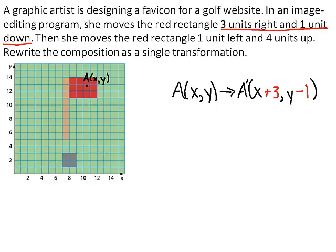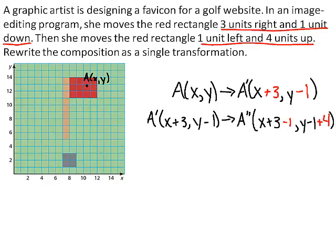Then the graphic artist moves A prime 1 unit left and 4 units up. To find the coordinates of its image, subtract 1 from the x coordinate and add 4 to the y coordinate. x plus 3 minus 1 simplifies to x plus 2, and y minus 1 plus 4 simplifies to y plus 3. So A prime maps to A double prime.